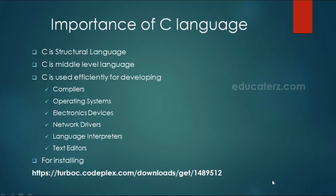C is used efficiently for developing compilers, operating systems, electronic devices, network drivers, language interpreters, text editors, and more. Even though we have many higher-level languages like Java, when we want to develop something like an operating system, we have to come back to C language. So today, C still has its own place.